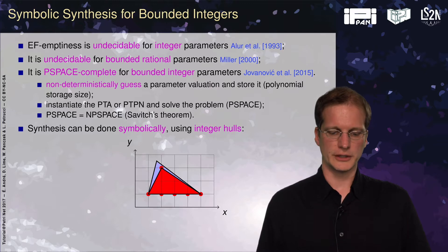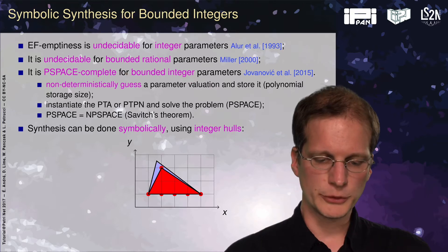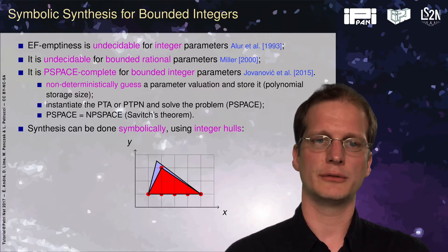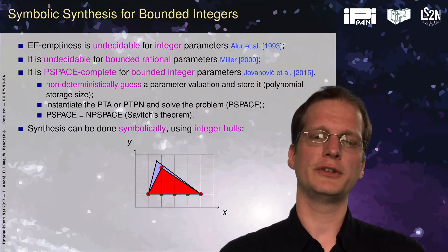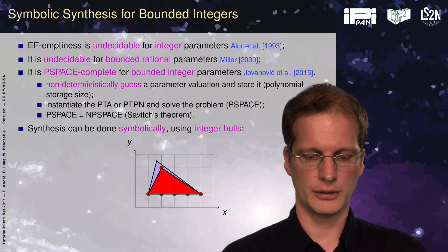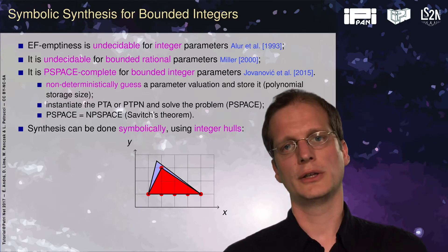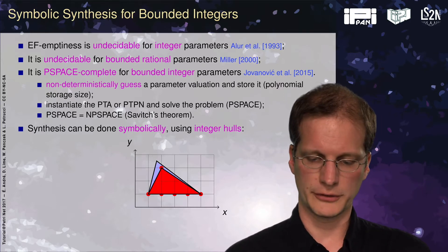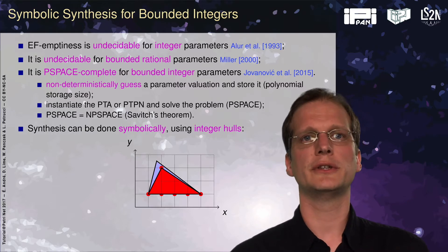What is interesting now is that we have a decidable problem, but we want a more efficient approach than explicitly computing for all values of the parameters. We will try to do this symbolically and compute in one step all the values of the parameters that permit reaching some marking. To do that we will use the integer hull.